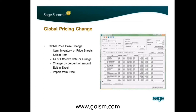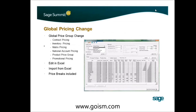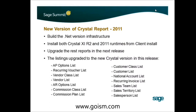One feature people have constantly requested — and we've had to do via stored procedures or imports — is global price changes. They've added a global price change utility so that at year end you can change all your prices and costs as of January 1st. You can edit and import from Excel, doing your manipulations there and bringing them into Sage 500. The utility supports contract pricing, inventory pricing, matrix pricing, national accounts, promotional pricing, and price breaks. There's a lot of flexibility in the global pricing change utility in the next release.